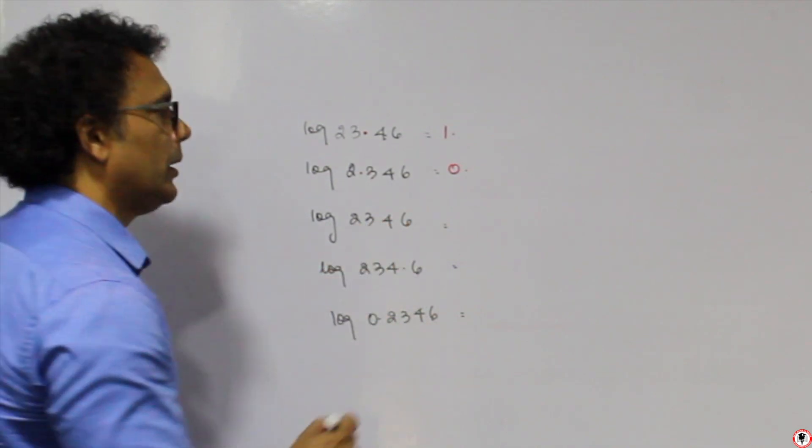Checking 23 in column 4 gives 3692. The mean difference for 6 is 11. So we add 3692 plus 11 to get 3703. So the mantissa is 3703. Combined with characteristic 1, log of 23.46 = 1.3703.